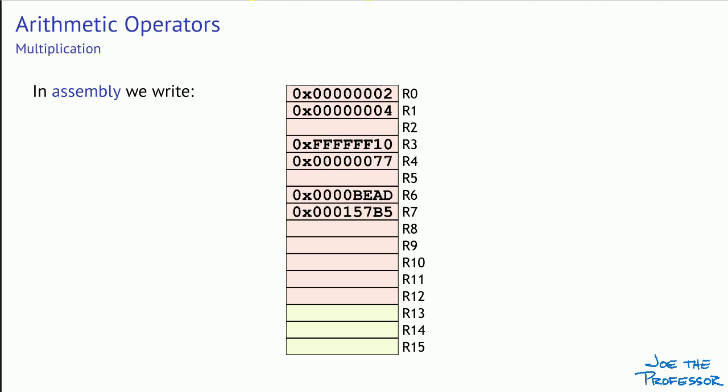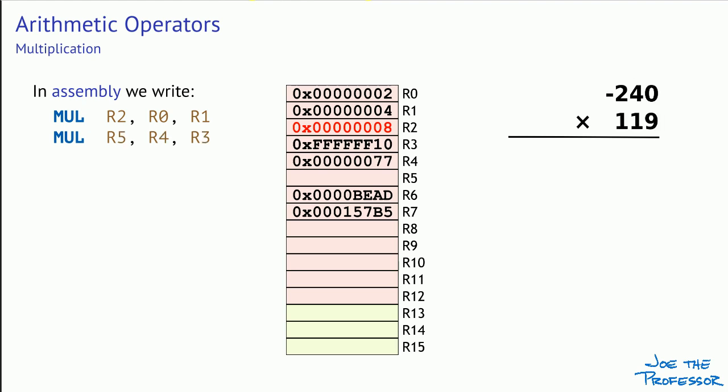Now let's look at the basic multiply instruction. Multiplication is commutative like addition, so we don't have to worry about the order of the operands. The multiplication instruction does not allow the use of an immediate operand. Suppose we already have values in the registers as shown here. Using the three-operand form of the multiply instruction, we can multiply the values in R0 and R1 and put the result in R2. We see that the processor has no trouble multiplying two times four. Let's see what happens when we have signed multiplicands — in this example, the value in R3 is negative, equal to the decimal value of minus 240, and as we would hope, we get a negative result.